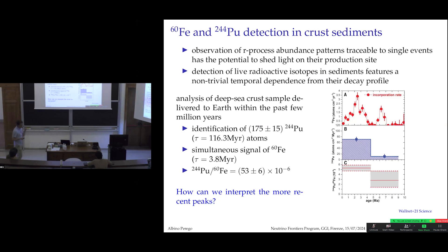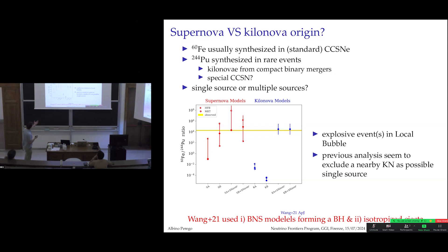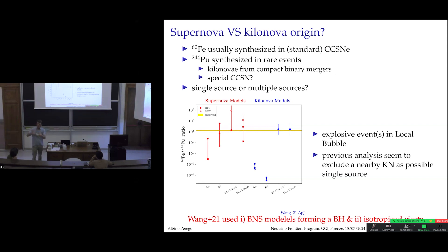The challenge is interpretation. One group concluded that perhaps special classes of supernovae alone, or a combination of a previous supernova that polluted the local bubble followed by another event dragging pre-existing plutonium, could explain the observations. Kilonovae were found to dramatically fail in that analysis. As a kilonova enthusiast, I took this as a challenge and asked: are we sure kilonovae cannot do the job? We noted that those models typically assumed prompt black hole formation — so no spiral-wave wind — and that the ejecta was isotropized.